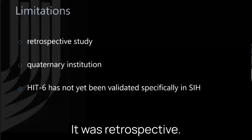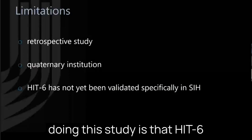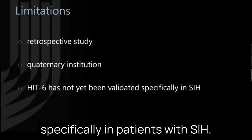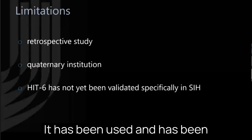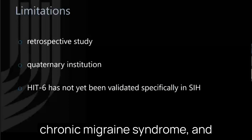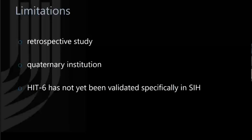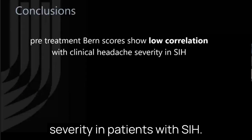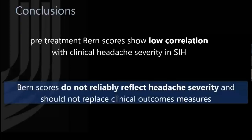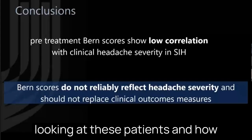Limitations of our study include that it was retrospective, Duke is a quaternary institution, and importantly, HIT-6 has not yet been validated specifically in patients with SIH. It has been widely validated for assessing headache severity in patients with episodic and chronic migraine syndrome and used in clinical trials for those patients, but it was the best measure available to assess impact on quality of life and headache severity. The conclusions were that pretreatment Burn Scores show low correlation with clinical headache severity in patients with SIH, and these scores do not reliably reflect headache severity and should not replace clinical outcomes measures when assessing patients post-treatment.